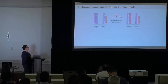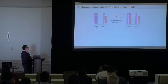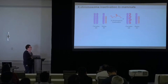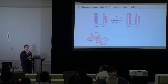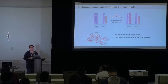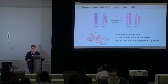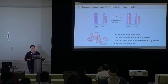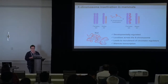In placental mammals, dosage balance is achieved through X chromosome inactivation, which is orchestrated by a single lncRNA gene called XIST. XIST is necessary and sufficient to induce X chromosome inactivation — if you express it in male cells, you will silence an X chromosome in males. XIST is tightly developmentally regulated, turning on immediately upon differentiation from the inner cell mass when random X inactivation initiates.